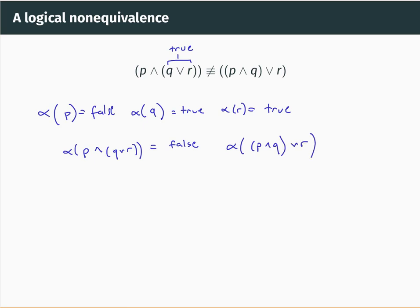For the right-hand side, (P and Q) or R: since alpha of R is true, and true or anything is true, this evaluates to true. For this truth assignment, the left-hand well-formed formula got a different value to the right-hand well-formed formula. So that proves that those two well-formed formulas are not logically equivalent.